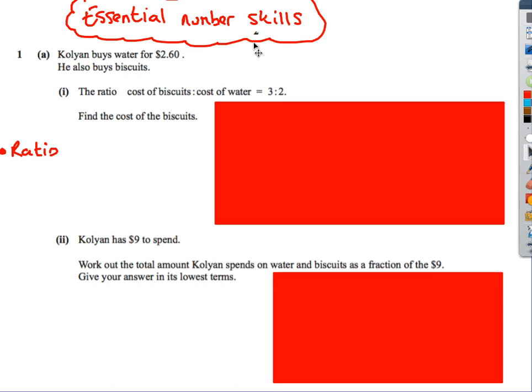The first topic to look at is the essential number skills. These are pretty predictable. They come up every single paper and they're going to test basically ratios, percentages, things like that. Here's the first question. We've got a ratio question. Ratio of cost to biscuits and cost to water is 3 to 2. We've been told what the water is. Find the cost of the biscuits.